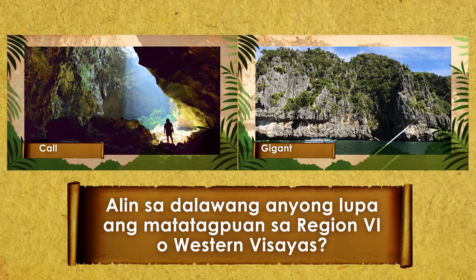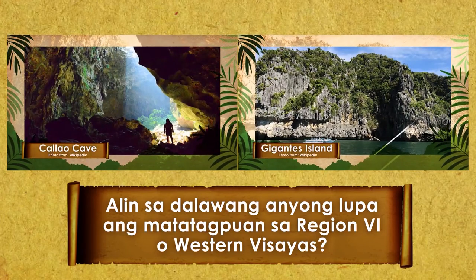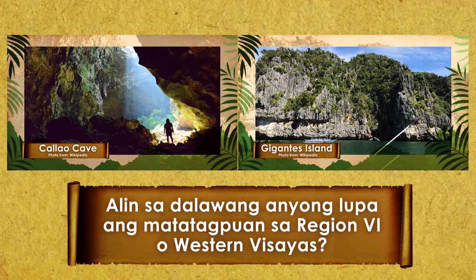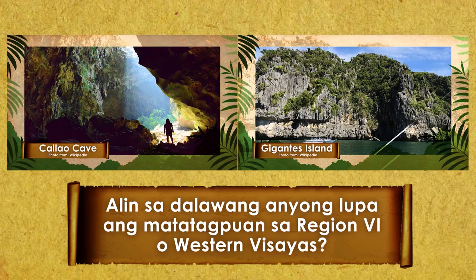Ikalimang bilang: alin sa dalawang anyong lupa ang matatagpuan sa Region 6 o Western Visayas? Gamit ang mata at hintuturo, sagot ay iyong ituro.